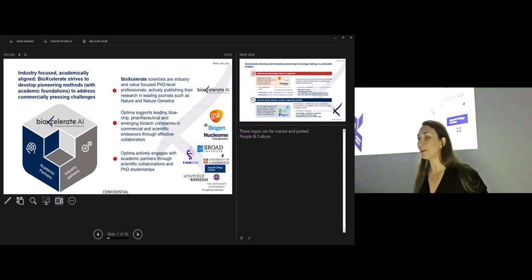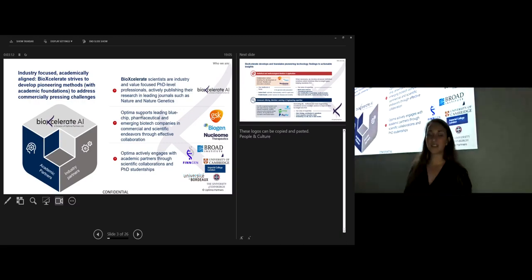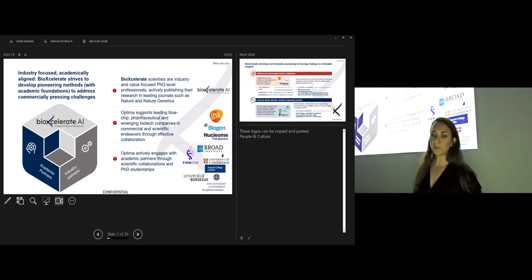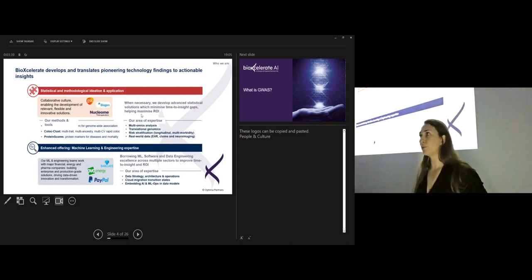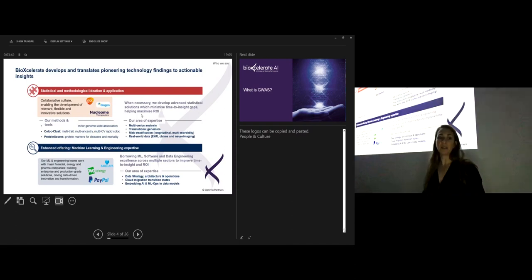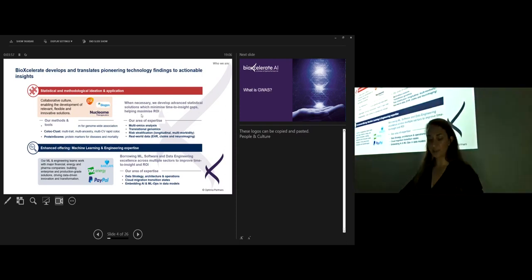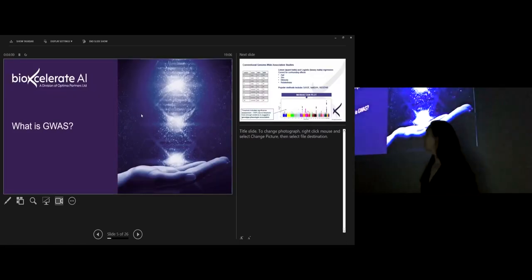Our clients vary from small emerging biotech companies to very big blue-chip pharma companies, and we are actively engaged with different academic partners such as Imperial, FinGen, Broad Institute. Our strongest collaboration is with the University of Edinburgh as we are an Edinburgh-based company, and we even have part-time PhD and postdoc students that work part-time for the University of Edinburgh and part-time for us. Our focus is in statistical and methodological development and its application, and this is further complemented by our machine learning and engineering expertise because we are based in a data science and engineering company.